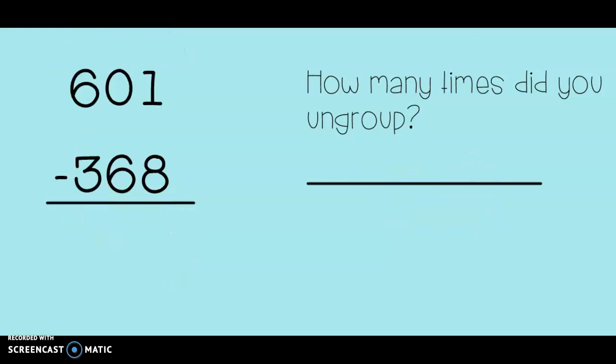Problem number 3: 601 minus 368. As always, we start in the ones. 1 minus 8. Can I do that? No, I can't. But look at my neighbor next door. They don't have any. So that means I need to start ungrouping with my hundreds. If my neighbor can't give me any, then I'm going to have to go over to the other neighbor. Now I ungroup that hundred. That gives me 10 tens. But I need to make sure my ones are happy too. So let's take one of those tens away and give it to the ones place.